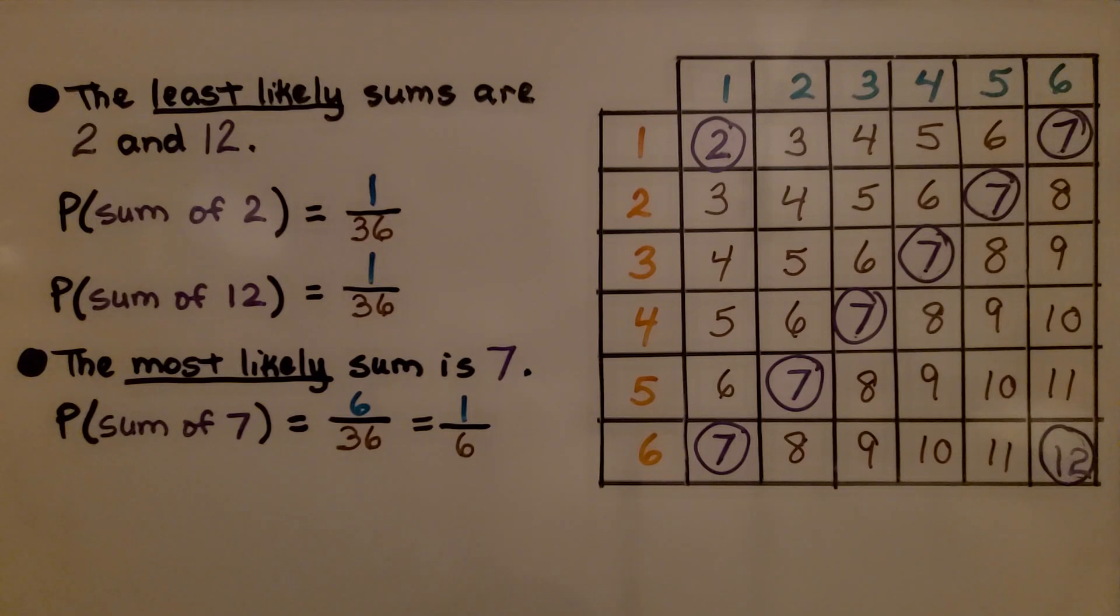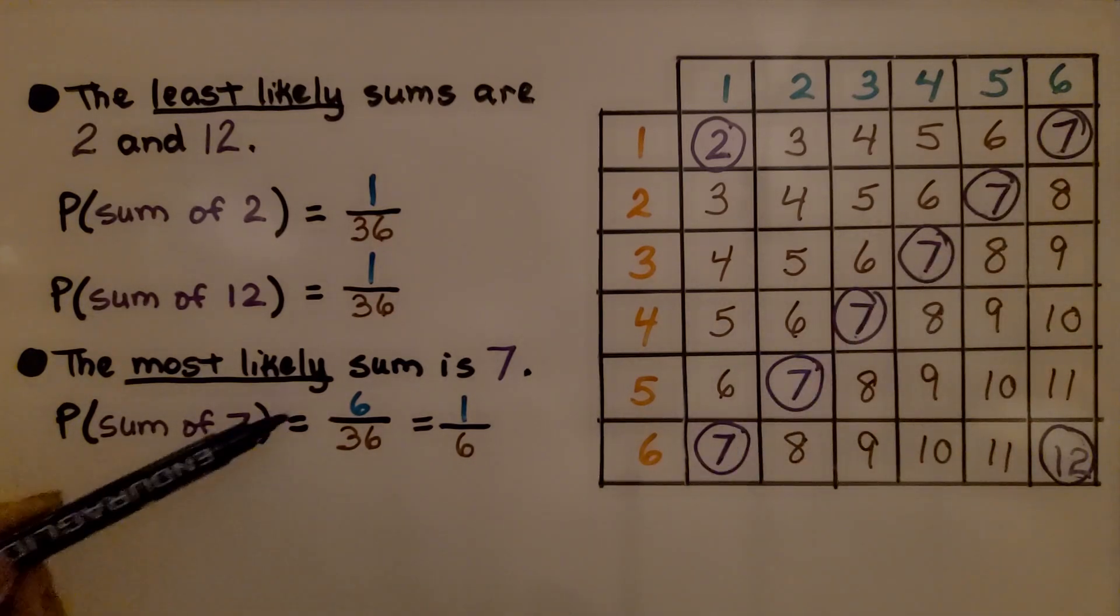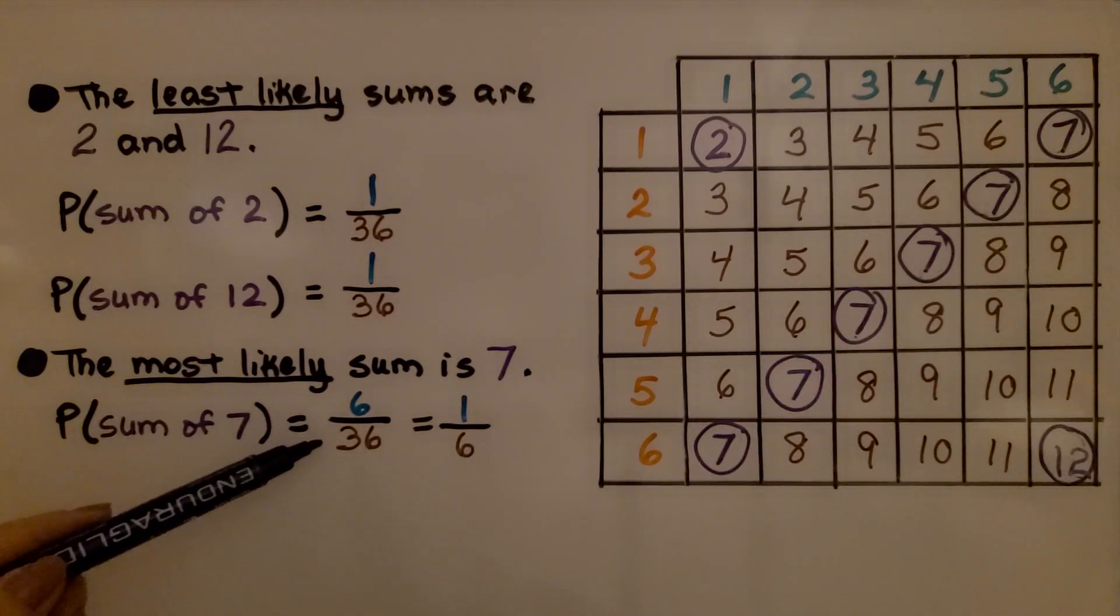The most likely sum is 7. The probability that our event is going to be the sum of 7, look how many there are. That's 6 out of 36 cells, which is 1/6.